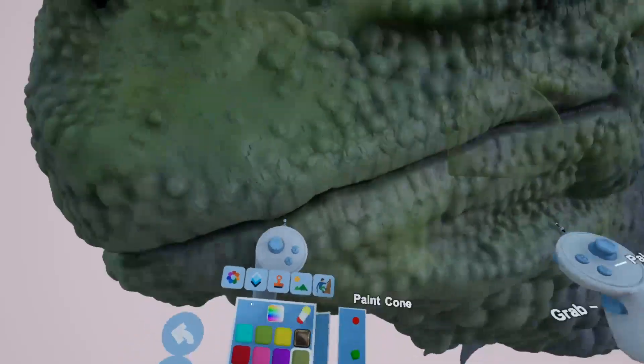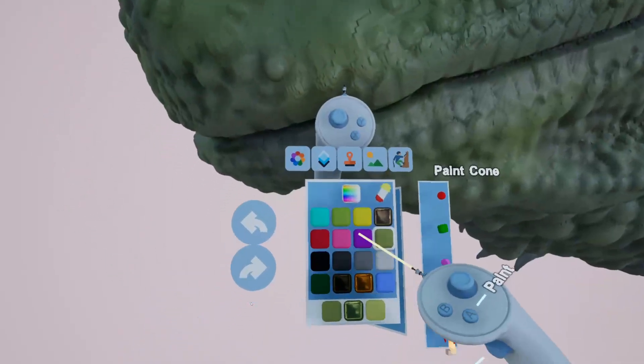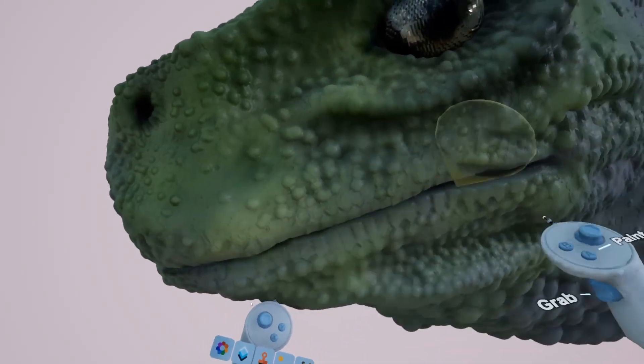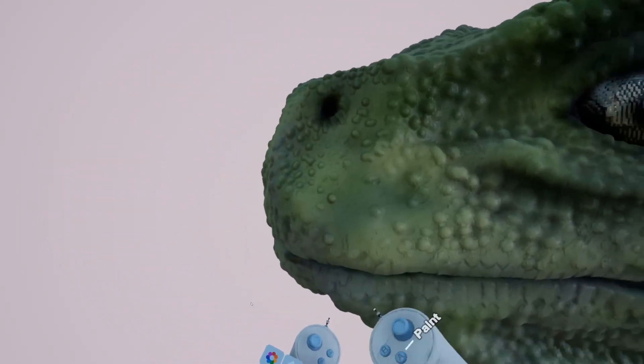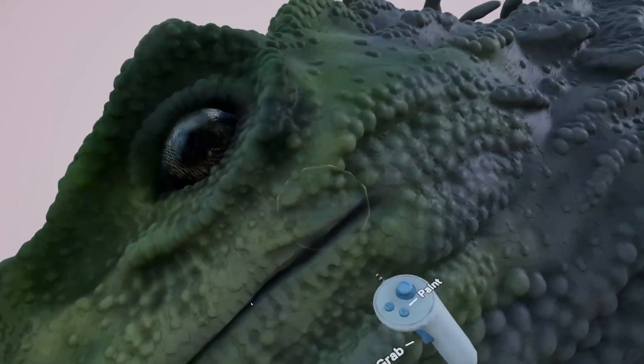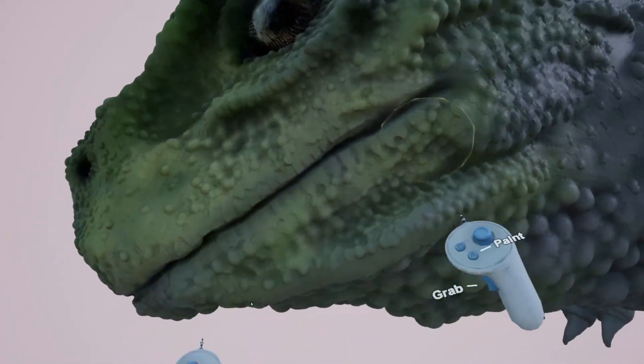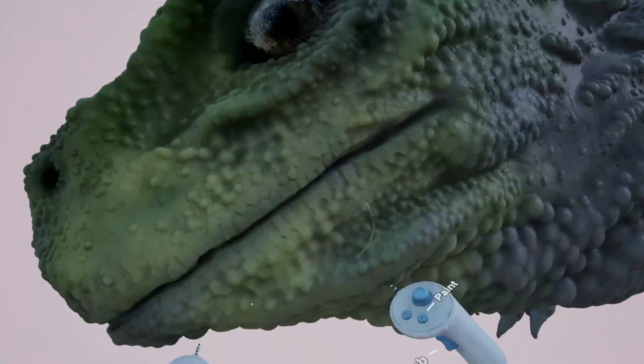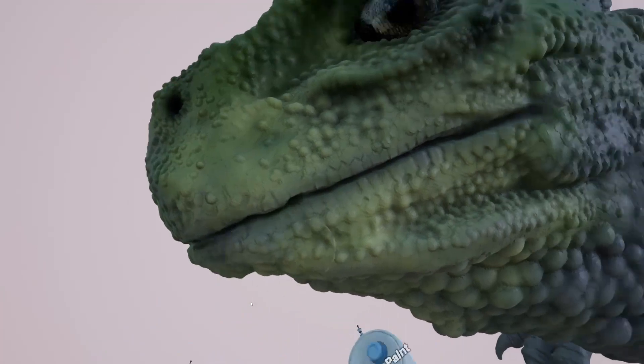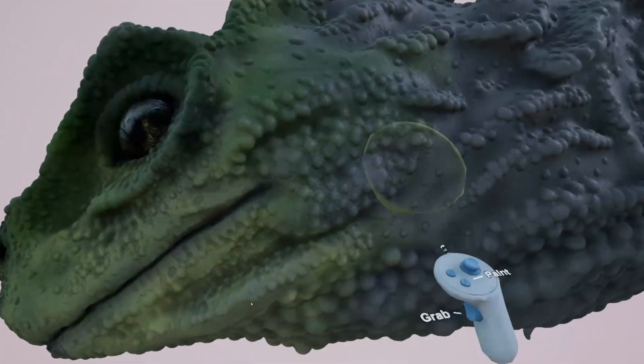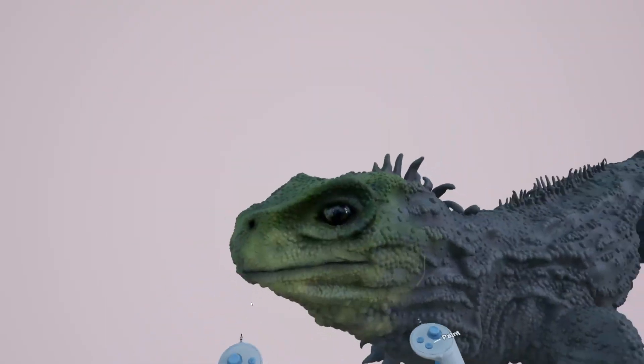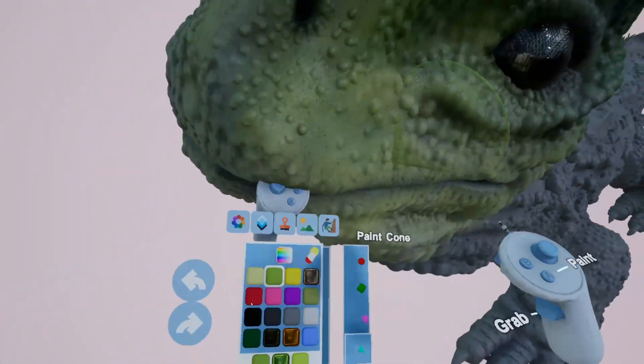Now we just go back to a lighter one here. I might find an even lighter one than that. Just need a slightly different color because they're not all green on the top. Quite often lizards and things are a lighter color underneath.